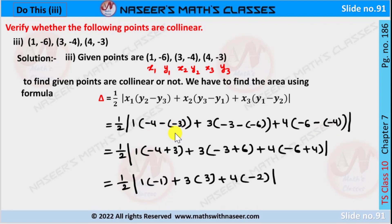then we can write minus 4 plus 3, minus 3 plus 6, and minus 6 plus 4. Minus 4 plus 3 is minus 1, and minus 3 plus 6 is 3, and minus 6 plus 4 is minus 2.